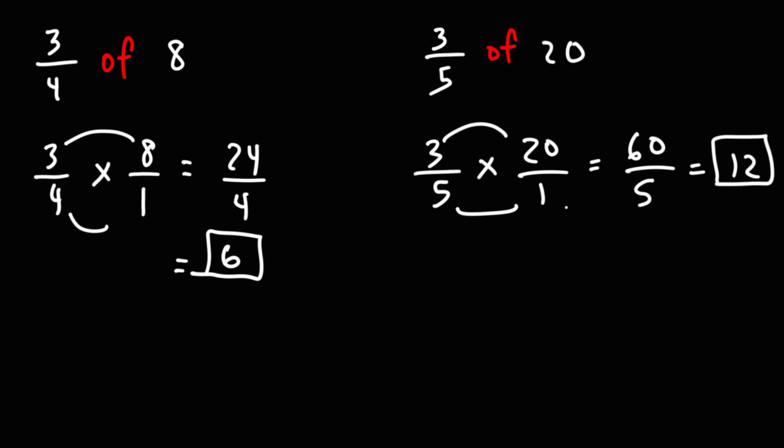Now before you multiply across you could also simplify it this way. You can write 20 as 5 times 4 and then you can cancel the 5. So what you're left with is 3 times 4 which is 12 over 1 and that simplifies to 12.